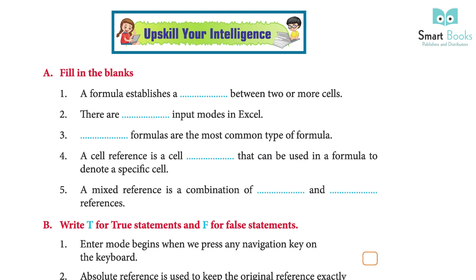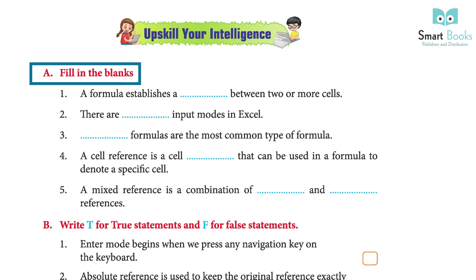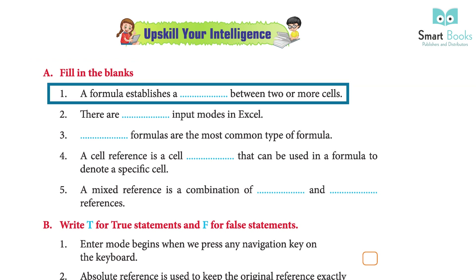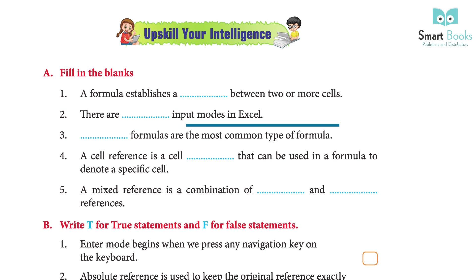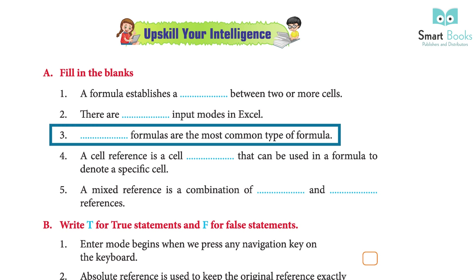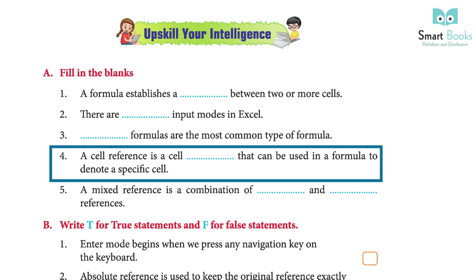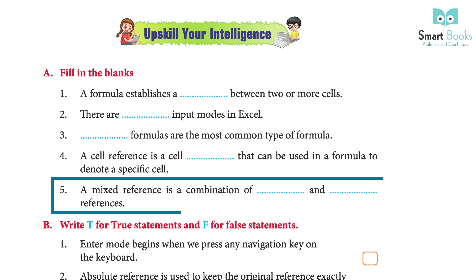Upskill your intelligence — Fill in the blanks: 1 — A formula establishes a relationship between two or more cells. 2 — There are three input modes in Excel. 3 — Arithmetic formulas are the most common type of formula. 4 — A cell reference is a cell address that can be used in a formula to denote a specific cell. 5 — A mixed reference is a combination of relative and absolute references.